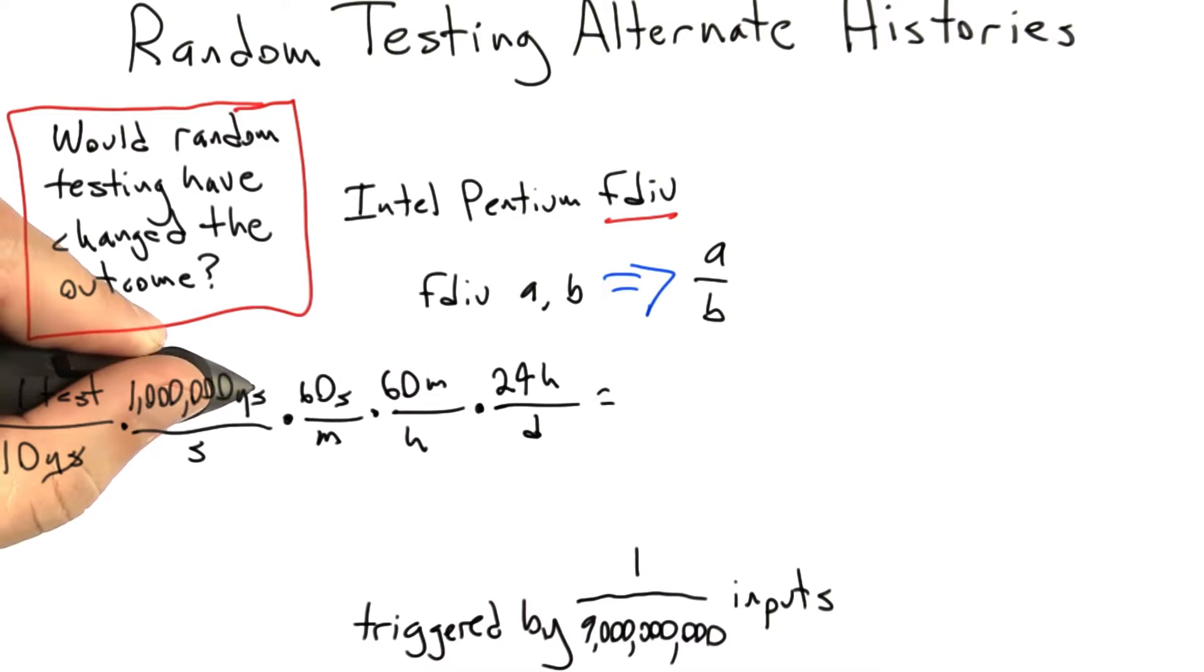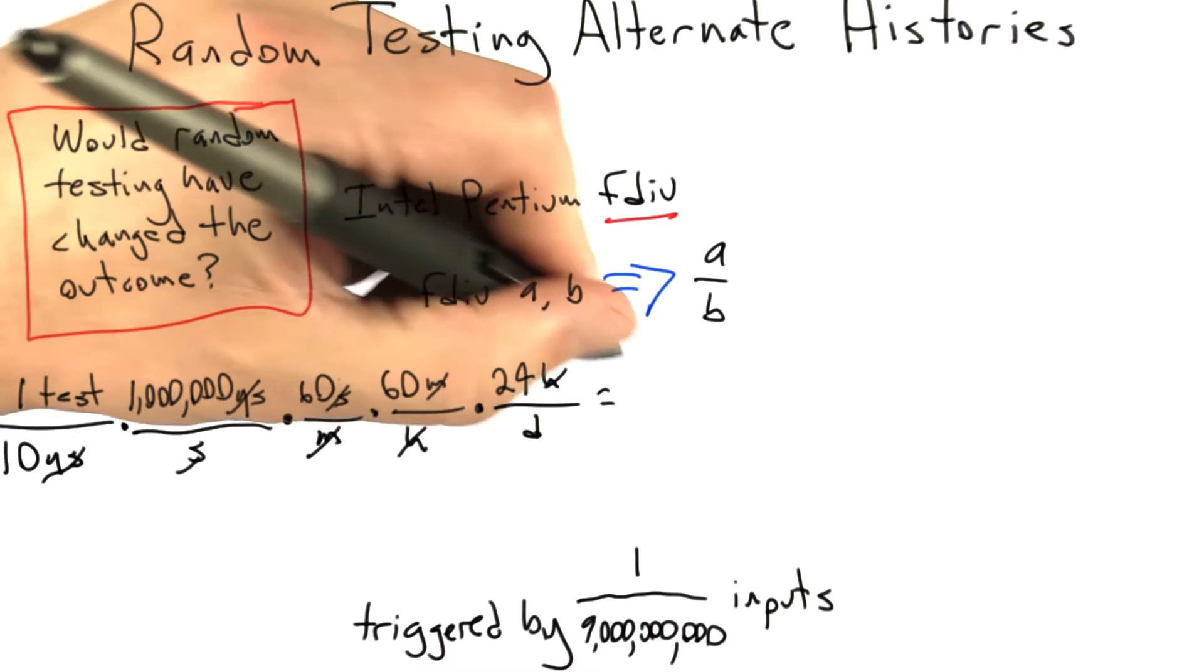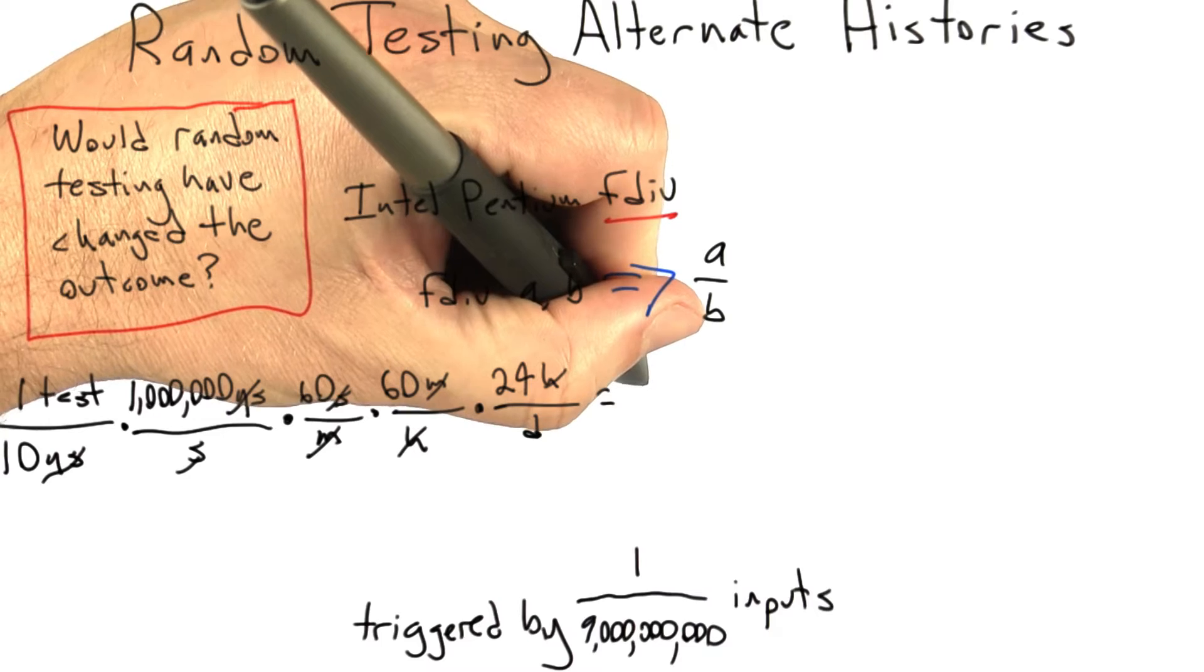All right, so now we're going to do some unit cancellation. We can kill microseconds, we can kill minutes, we can kill seconds, and we can kill hours. So if we do the multiplication, we can get tests per day.